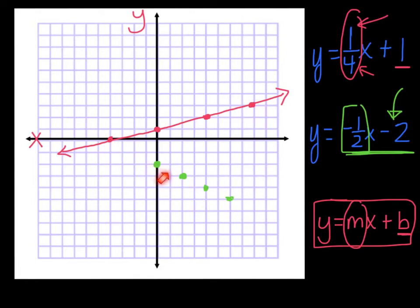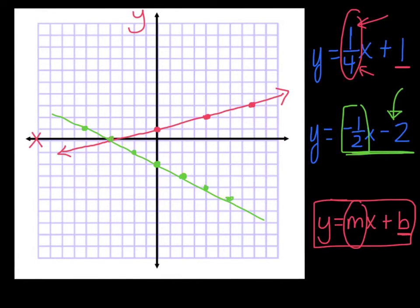I'm going to go backwards — up one, back two; up one, back two to see where it crosses. Going up one, back two; up one, back two; up one, back two. I saw right away where it crossed, but I kept going for at least one more point. Let's go ahead and connect this and draw arrows.